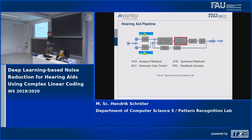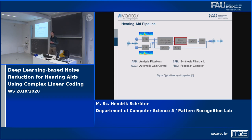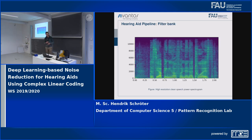The hearing aid pipeline I'm working with is shown in this picture. In the beginning we have some kind of audio signal recorded with microphones. We transform it into the frequency domain using an analysis filter bank, which is very similar to a short-time Fourier transformation. Then we do some directional processing, which results in a single-channel signal. This is used for our noise reduction, and in the end the signal is transformed back to the time domain using a synthesis filter bank so we can listen to it.